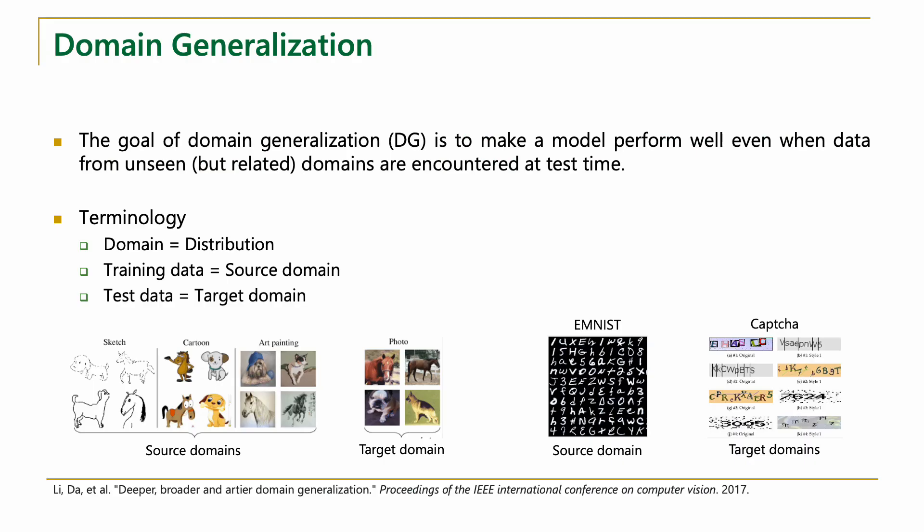The objective of domain generalization is to develop models that are resilient to domain shifts at test time without having access to any data from those domains during training. For example, the training data could comprise images of objects in the form of sketches, cartoons, and paintings, whereas the test data could be images of the same objects in a different style, such as photos taken from a camera, or the source domain could have grayscale images of the English alphabet, whereas the target domain could be colored images of the alphabets as used in CAPTCHA recognition tasks.